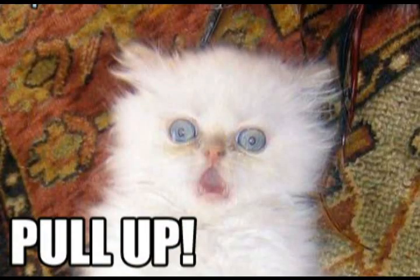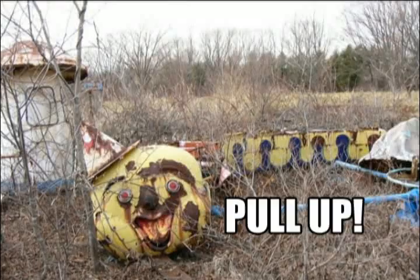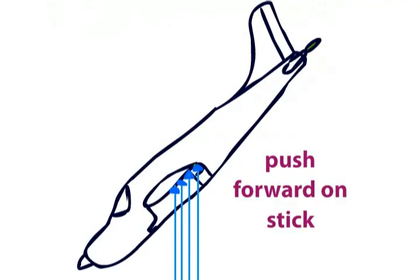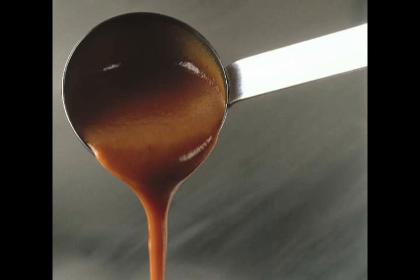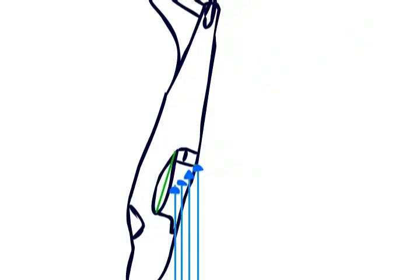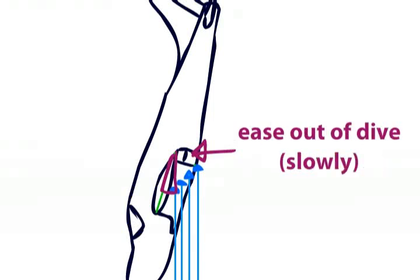Your instincts — and my brother, creepy American gentleman — will be telling you to do the opposite. However, you must actually push forward on the stick, as only reducing the angle of attack will get you out of a stall. This will move your nose even further downwards, possibly causing some brown seepage in your pants, but also moving your wing back within the critical angle. This will restore control, and you can ease out of the dive, albeit very slowly.